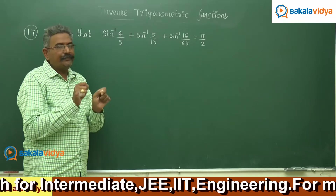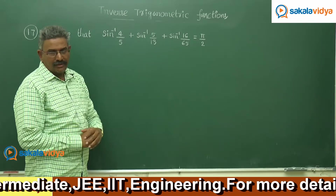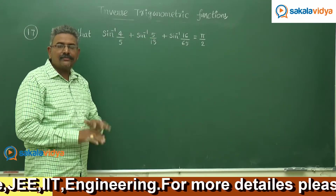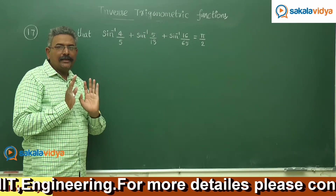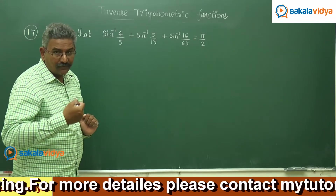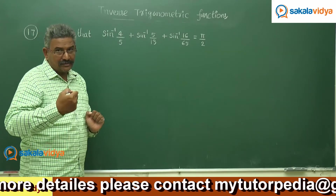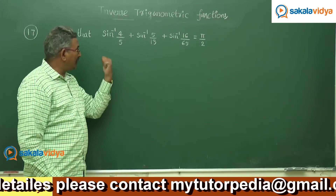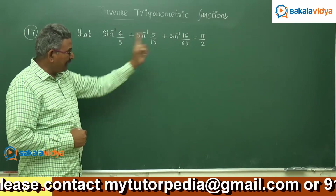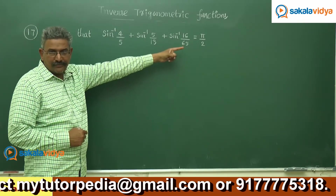First we have to group them. Let us consider only the first two. Suppose this is alpha and this is beta. Let us find out alpha plus beta — in terms of sin inverse or cos inverse — because the target value is here π/2.